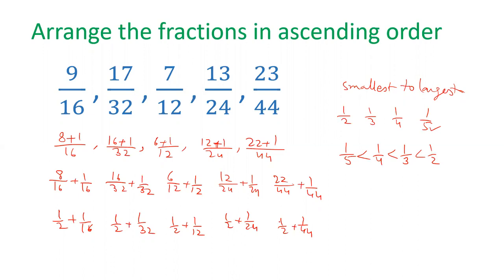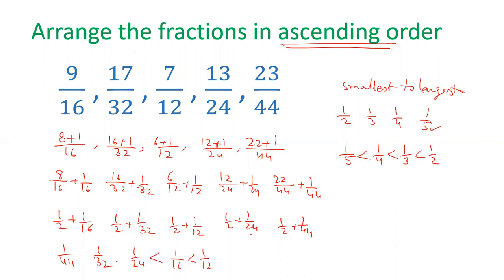Since we need to arrange the fractions in ascending order, let's order the remainder parts. 1 by 44 is smallest, then 1 by 32, then 1 by 24, then 1 by 16, and the largest is 1 by 12. If we add half to each of them, they become the corresponding original fractions.